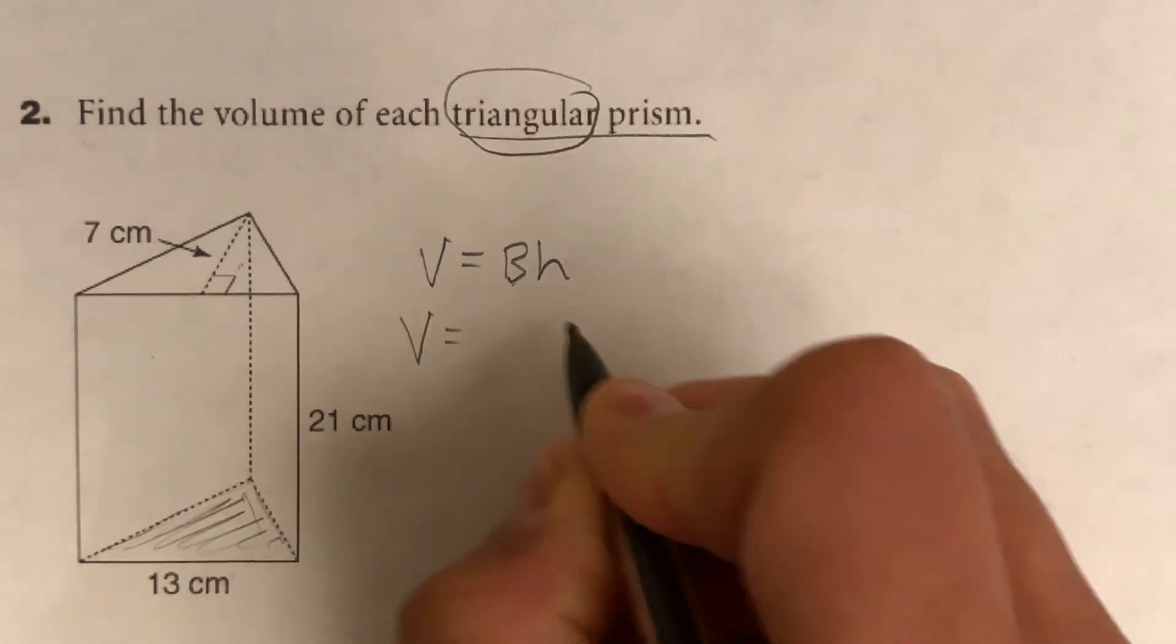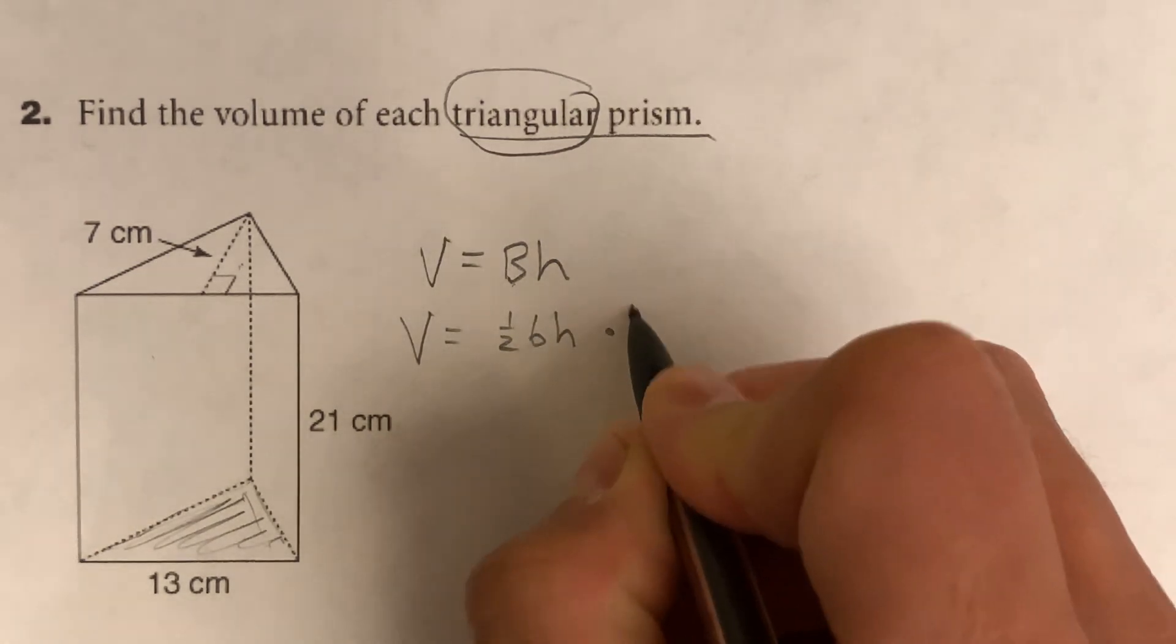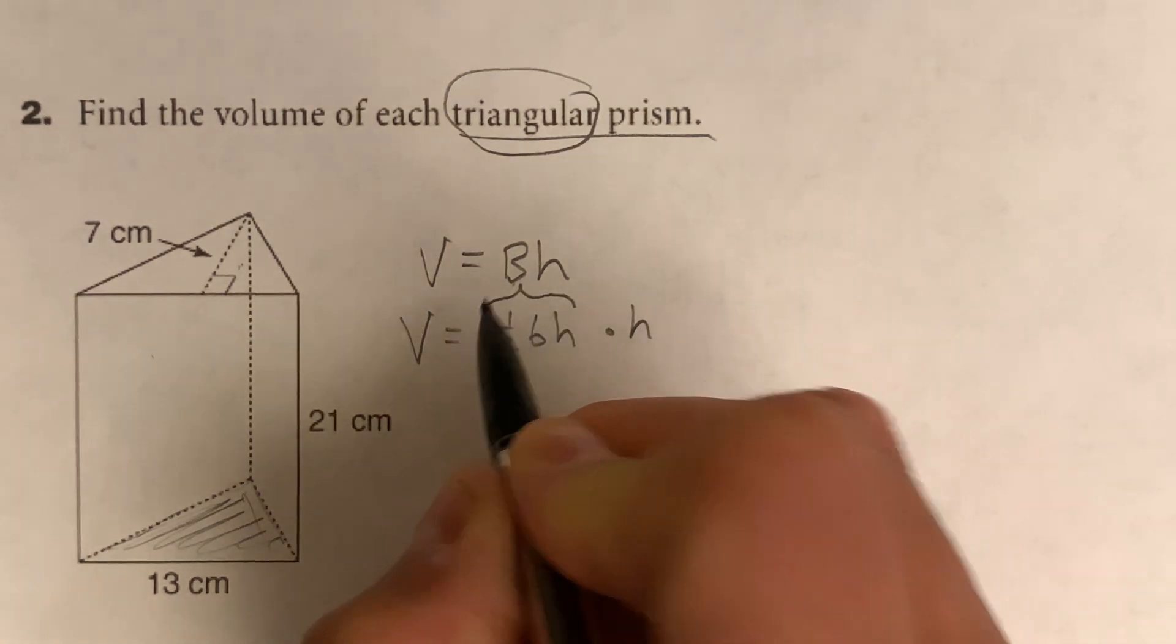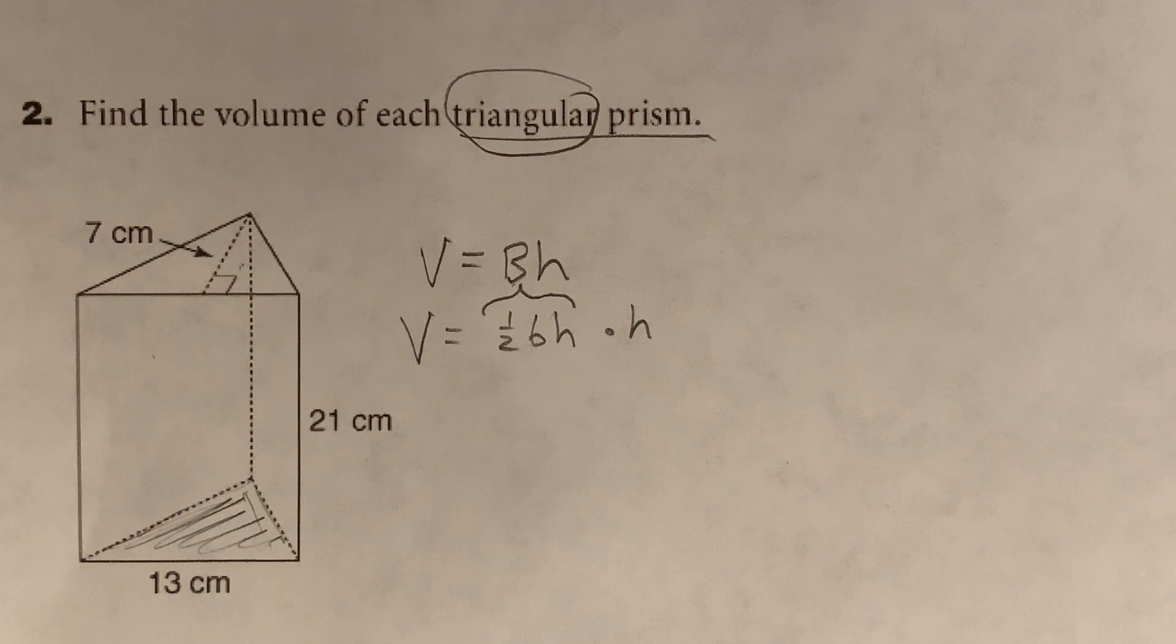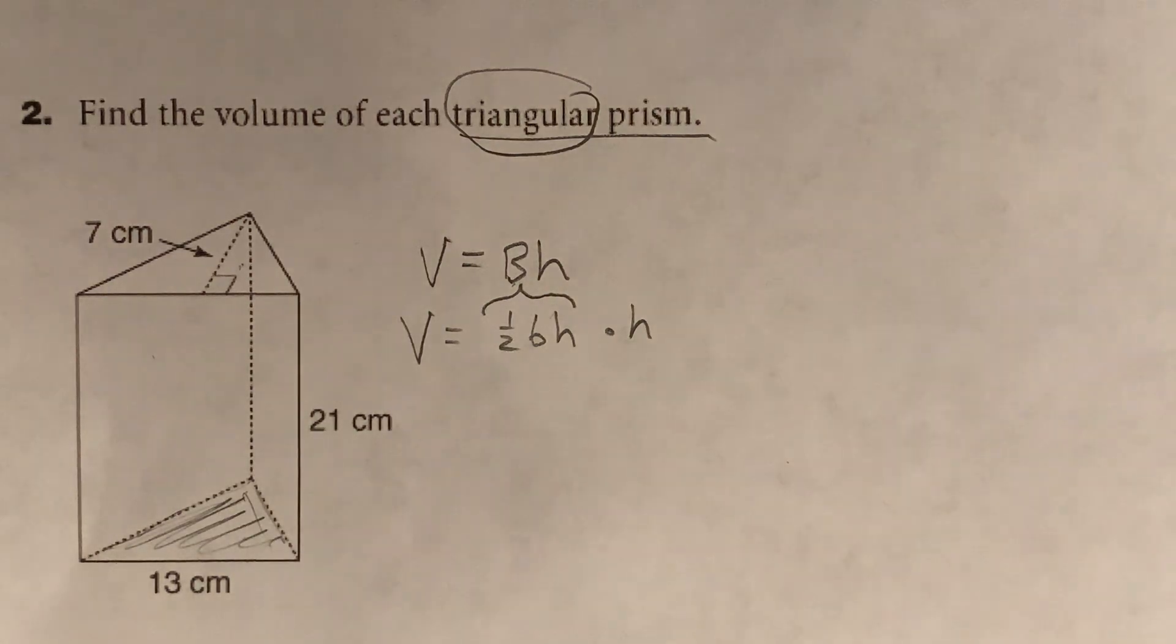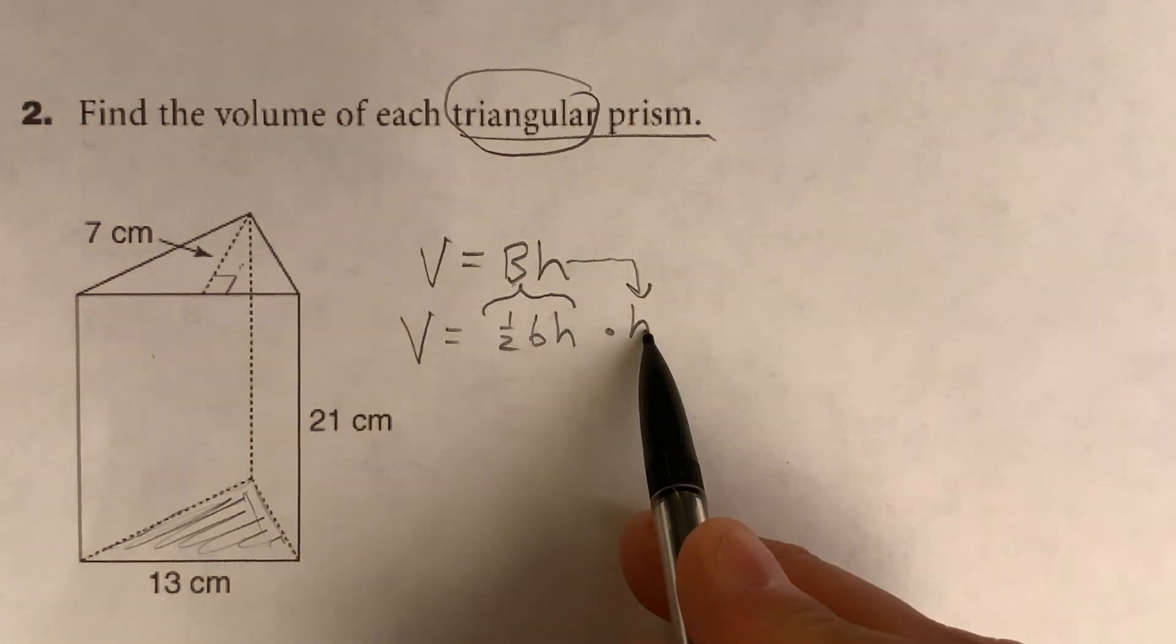So if you break this down, it's kind of like one-half the base times the height. Like this. This base area is no longer just base times height. It was two things yesterday. Now it's going to be half base times height because it's a triangle, and the triangle's area is half base times height. Then this height right here is this height here. That's the distance between the two bases.